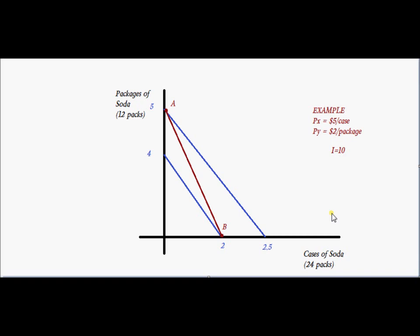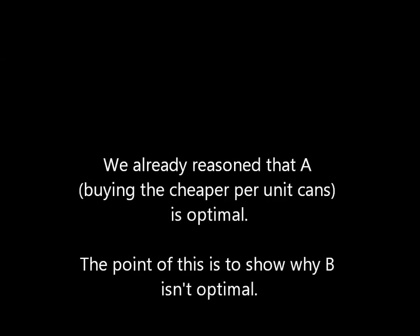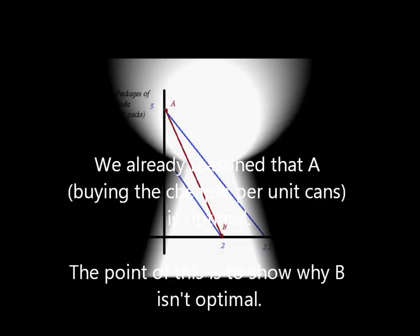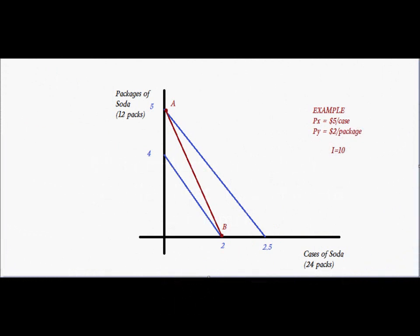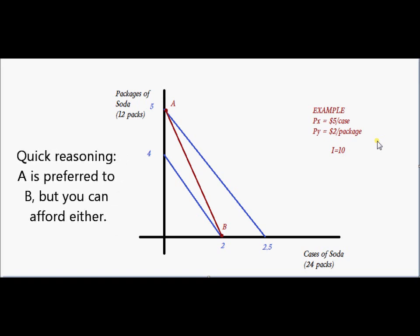If you're just trying to find a point where a budget constraint and indifference curves look tangent, well, both A and B would be candidates. Let's find out why we would end up at A, where we spend all of our money on packages. We had the intuition that they're cheaper per unit. But let's reason our way through it using economics and maybe we'll learn a different way to think about how to find the maximum utility.